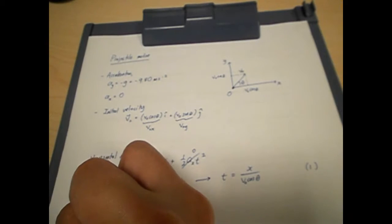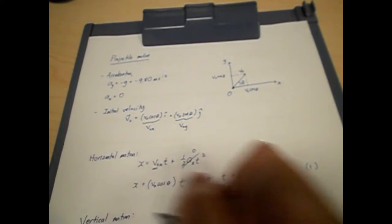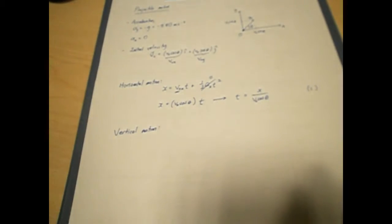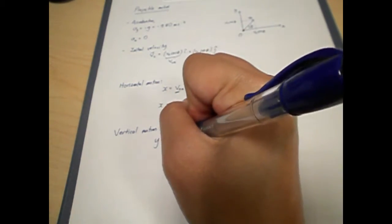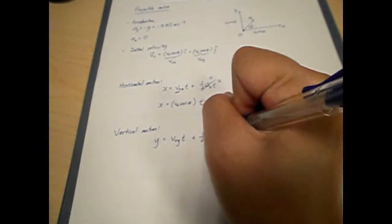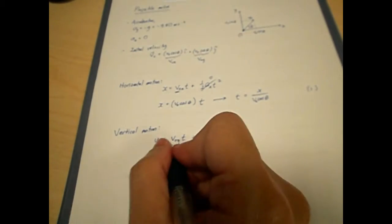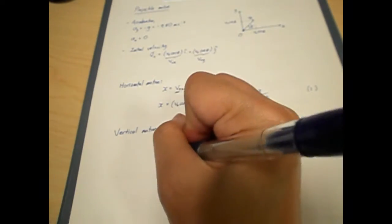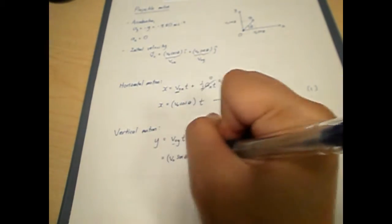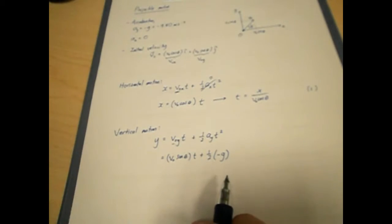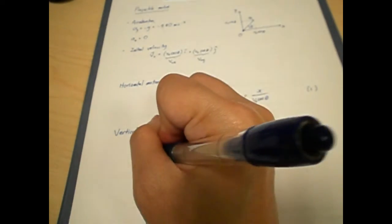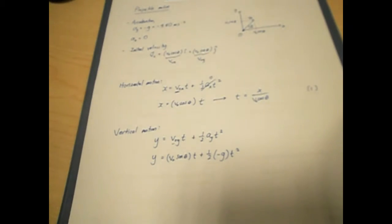Moving on to the vertical direction, we analyze the vertical motion. For vertical motion we have acceleration of 9.8 meters per second squared. The equation for displacement in the y-direction is the general kinematic formula. Substituting our values: the initial vertical velocity is V sin theta, and our acceleration is negative G — negative because it is towards the ground. So y = V sin theta · t − ½·G·t². This is our equation for displacement in the vertical direction.